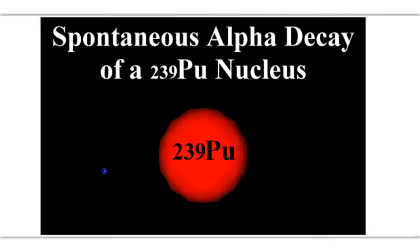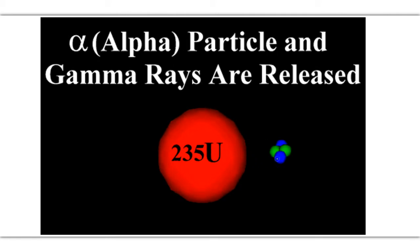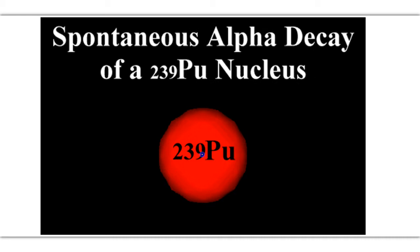So one more time, we're going to see 239 plutonium. When it gives off the alpha particle, notice that the atomic number drops by 2 and the mass number drops by 4.